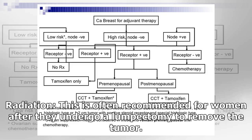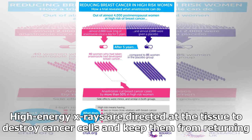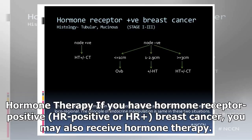Radiation is often recommended for women after they undergo a lumpectomy to remove the tumor. High-energy x-rays are directed at the tissue to destroy cancer cells and keep them from returning.